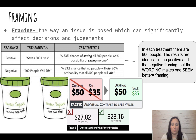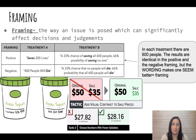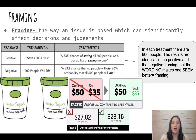Framing - which came up briefly before - is how something is presented significantly affecting what we decide or think. For example, two frozen yogurts: one says 'contains 20% fat,' the other says '80% fat free.' They're saying the same thing, but the one labeled '80% fat free' will sell much faster. Framing is the way things are presented altering your decision.